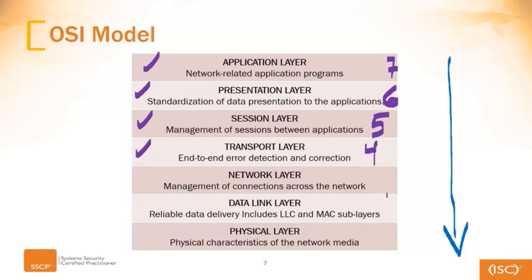Put a check mark right there. Over halfway done, not too painful so far hopefully. What about the network layer? Layer three — that's a tough one to make. Let's make sure we can do that without making a mess. There we go. Perfect, layer three.